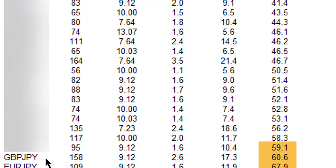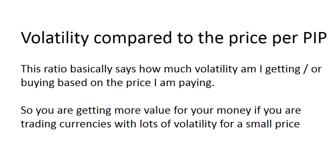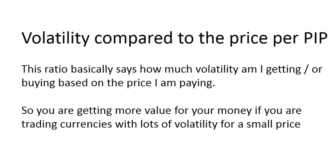The pound-yen and euro-yen are therefore a better deal as a Forex trader: firstly they move a lot more, and secondly they are less expensive because you're paying fewer pips. This is a basic common-sense ratio but nobody really calculates it like the more advanced Forex traders do. The second ratio asks how much volatility am I buying in the cost of the pips I have to pay. Whereas the previous ratio compared pips with pips, this one compares pips with dollars.